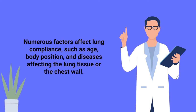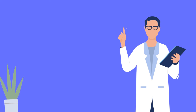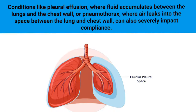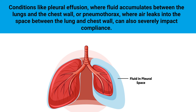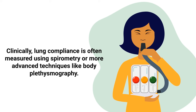Numerous factors affect lung compliance, such as age, body position, and diseases affecting the lung tissue or chest wall. Age tends to reduce lung compliance due to a decrease in the elasticity of lung tissue. Conditions like pleural effusion, where fluid accumulates between the lungs and the chest wall, or a pneumothorax, where air leaks into the space between the lung and chest wall, can both severely impact lung compliance.